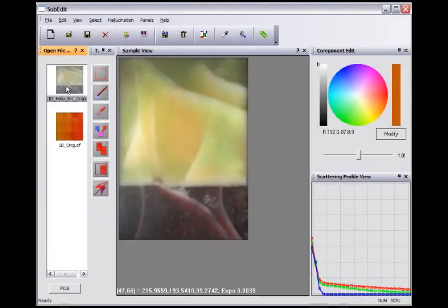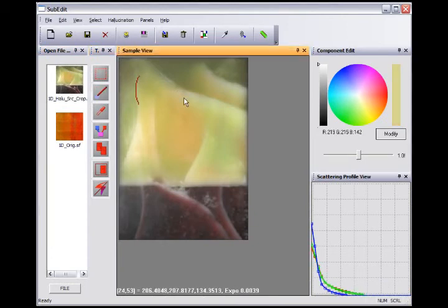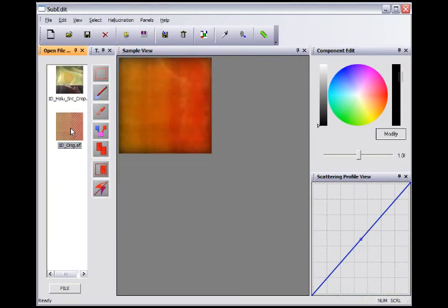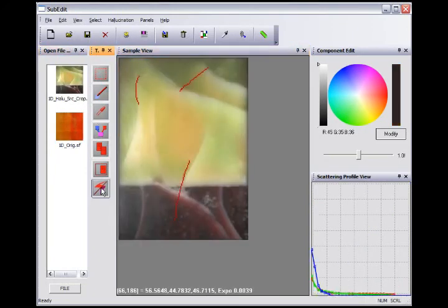With SubEdit, we can hallucinate a completely new BSSRDF from a single photograph of a translucent material sample, plus a different measured BSSRDF dataset. As shown here, the user only needs to copy scattering profiles from the measured yellow wax BSSRDF dataset and assign these to a few representative surface patches. The system automatically propagates the scattering profile to the whole image and generates a completely new BSSRDF.